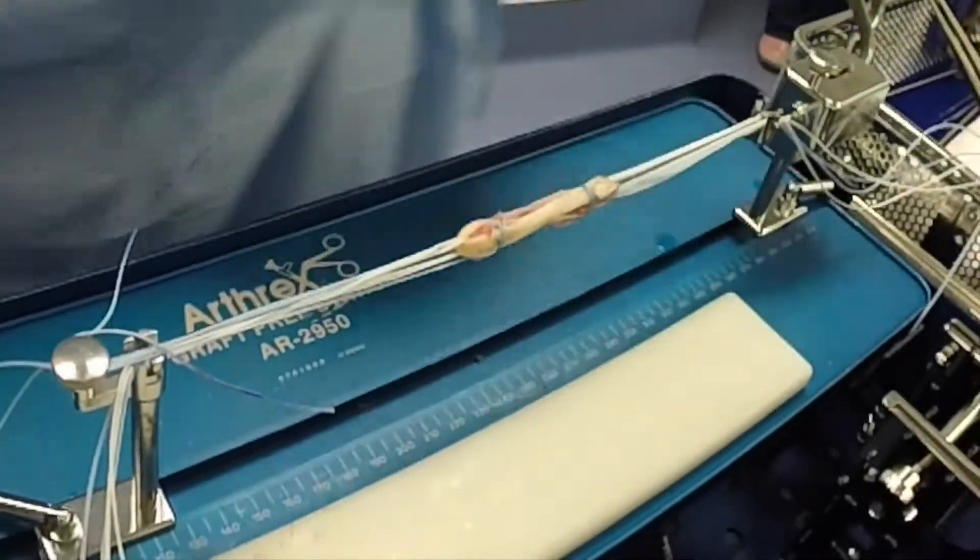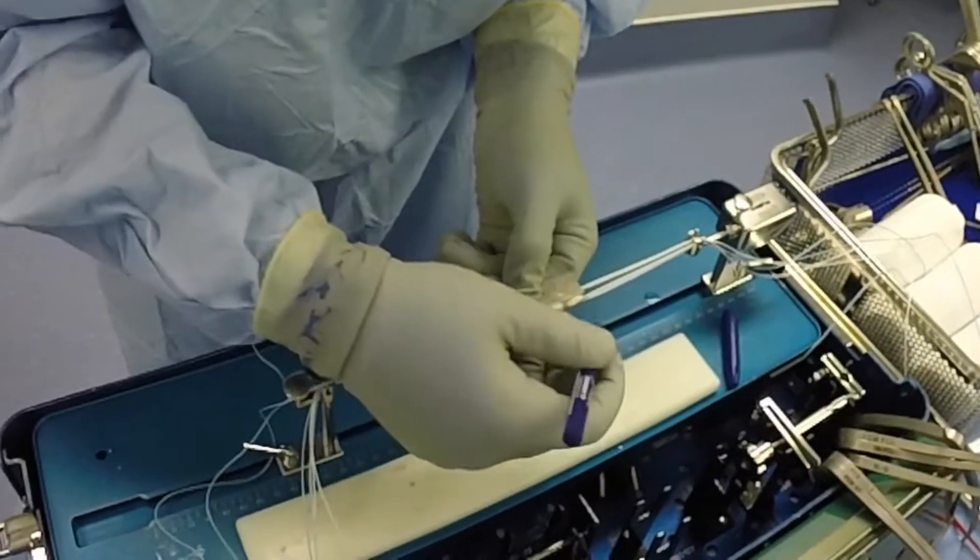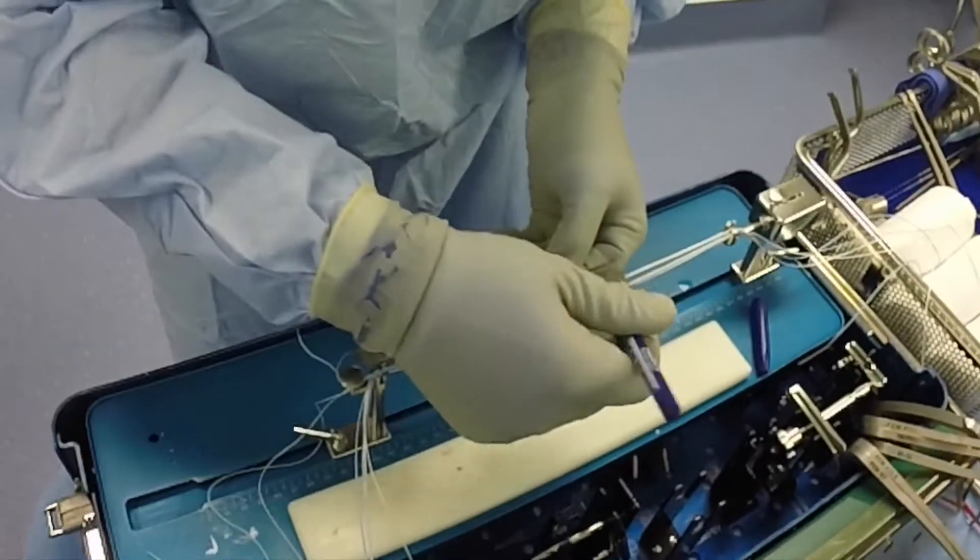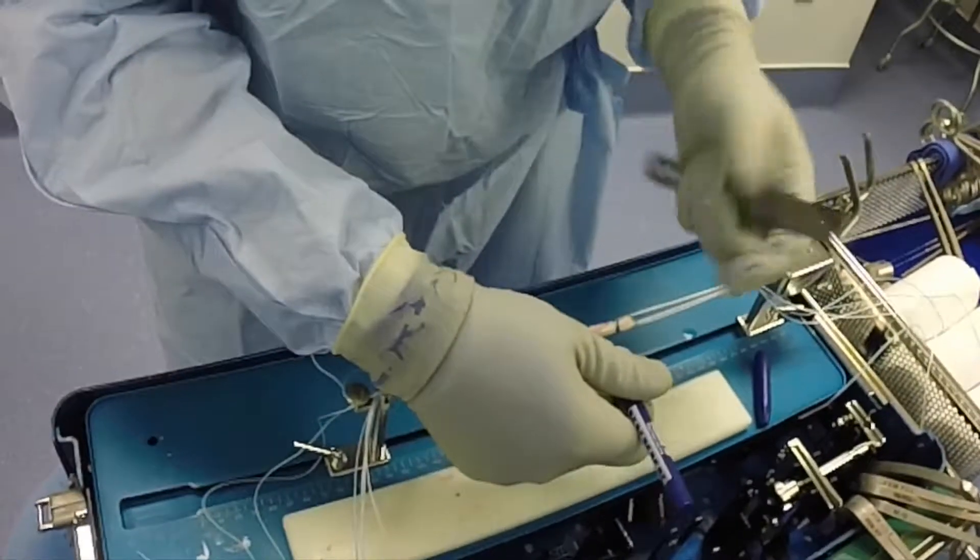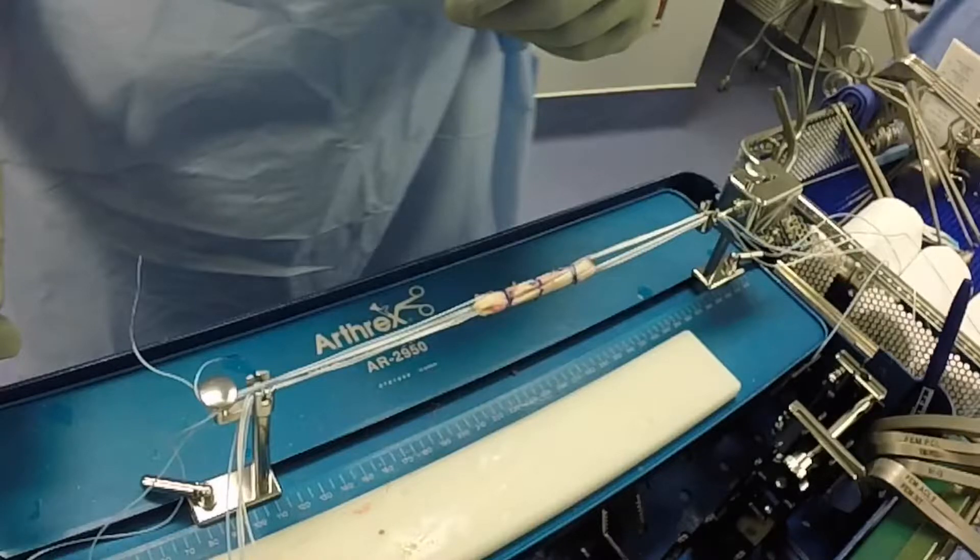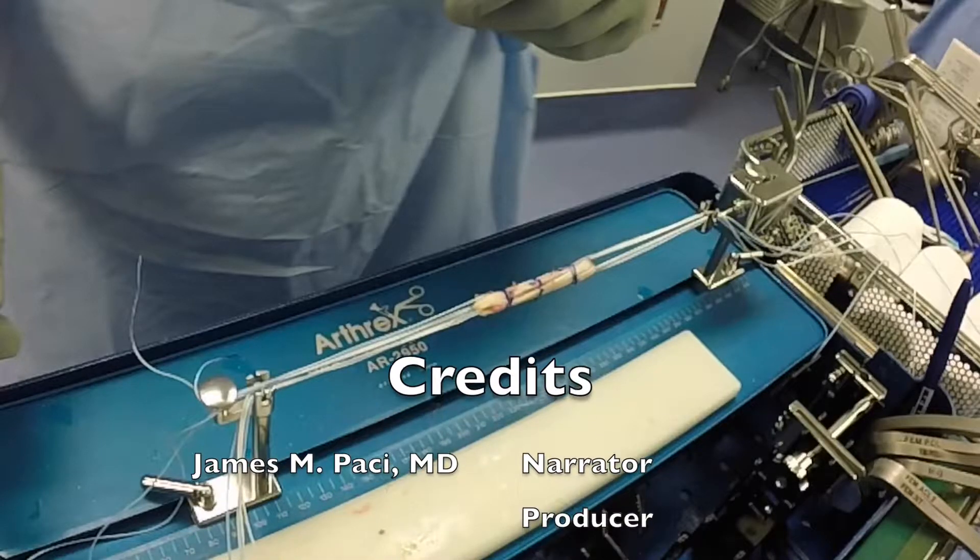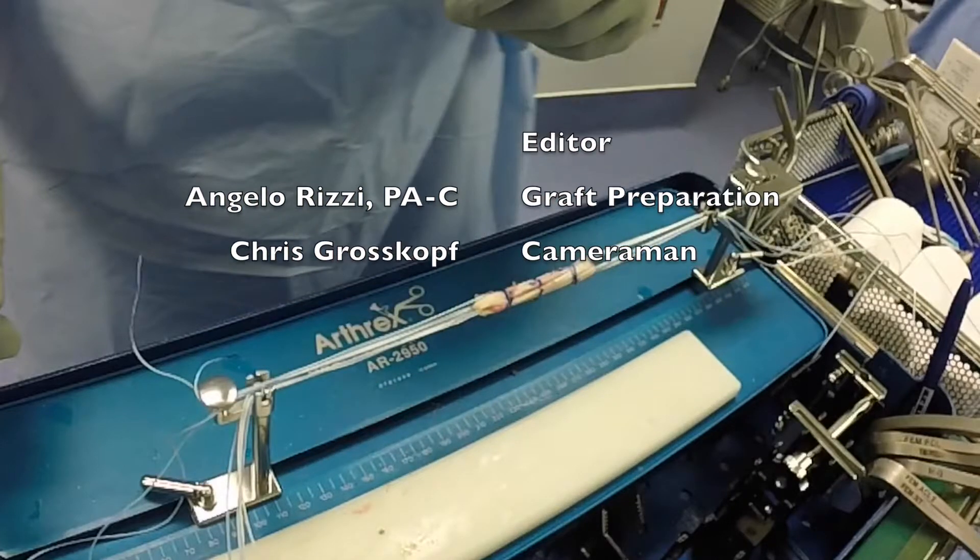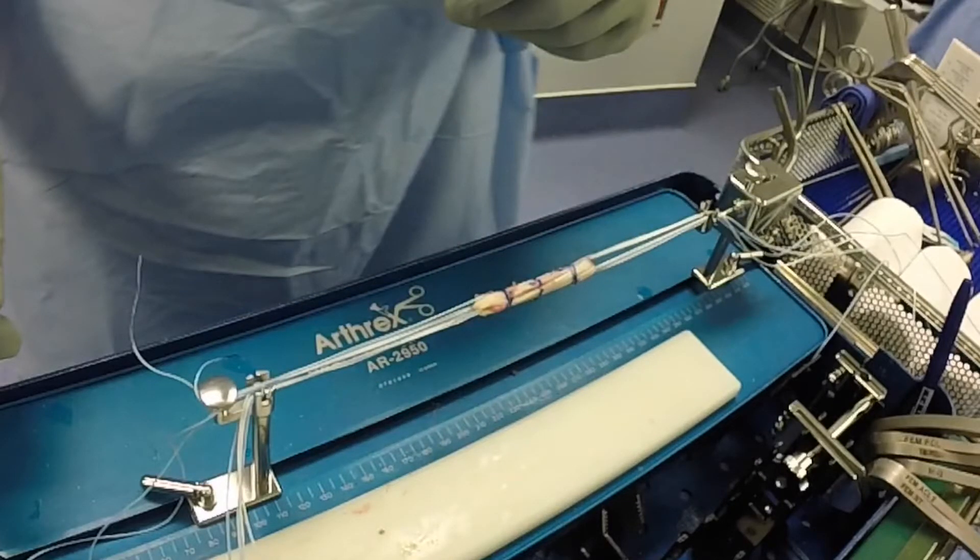And here you have your final graft. It's tensioned at 10 to 15 pounds. We then mark the graft generally at 15mm from each end and then at the central portion, what we call the 50-yard line, which can subsequently be referenced when tensioning and placing the graft intra-articularly.